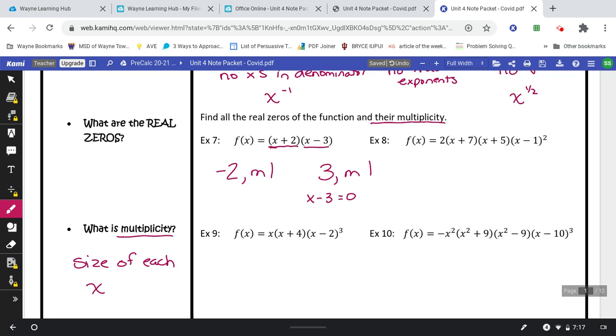On example number 8, here this 2 is not going to get us anything because there's no x. So no x means no real zero. Pretty much just says we don't get an answer from that part. Here, I've got negative 7. Multiplicity of 1. Here, negative 5, multiplicity of 1. And positive 1 with a multiplicity of 2. Notice that 2 right there, meaning there are two of these.